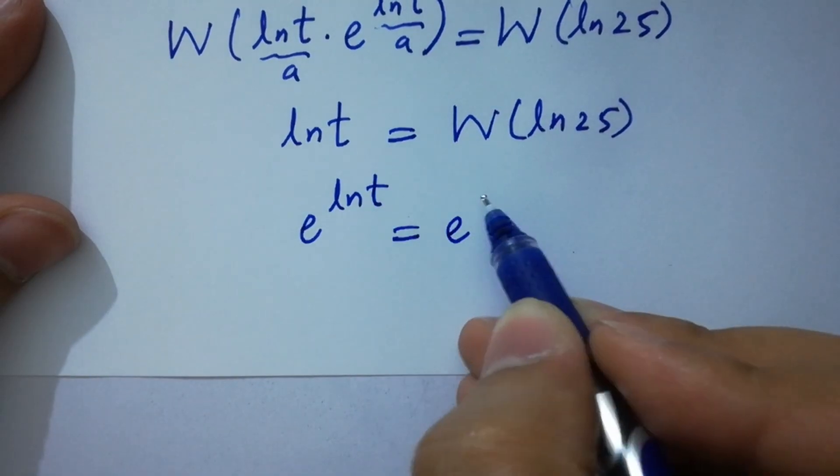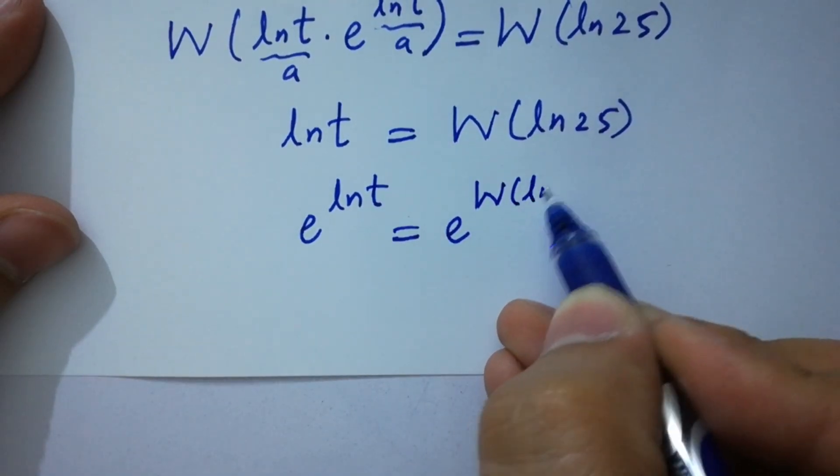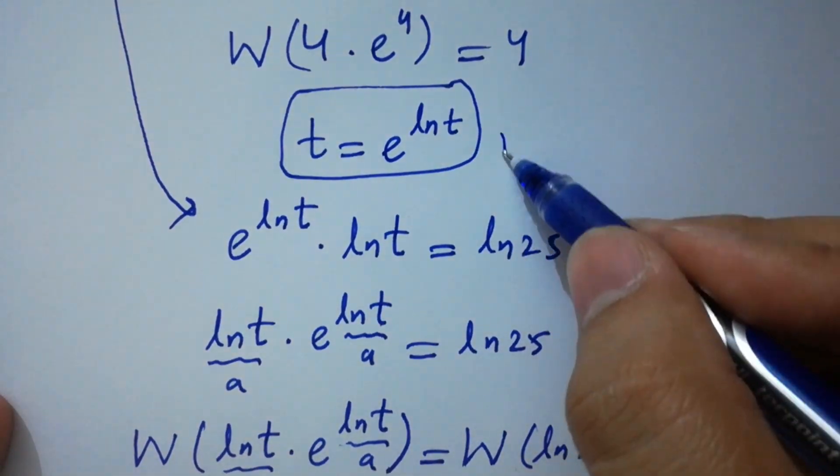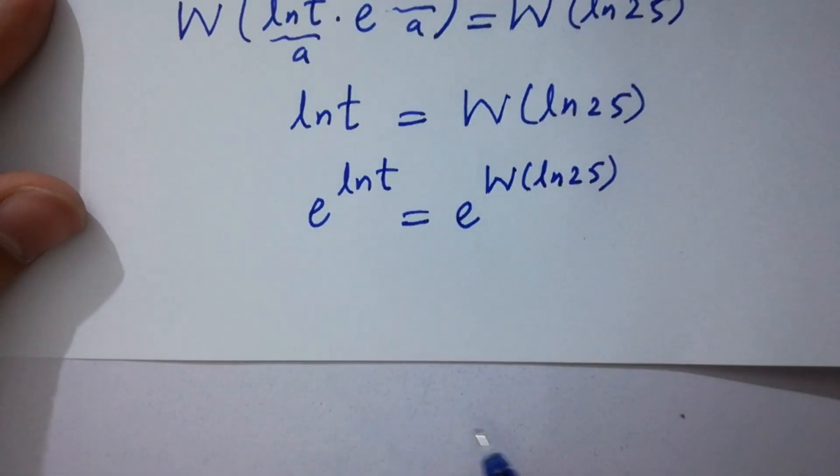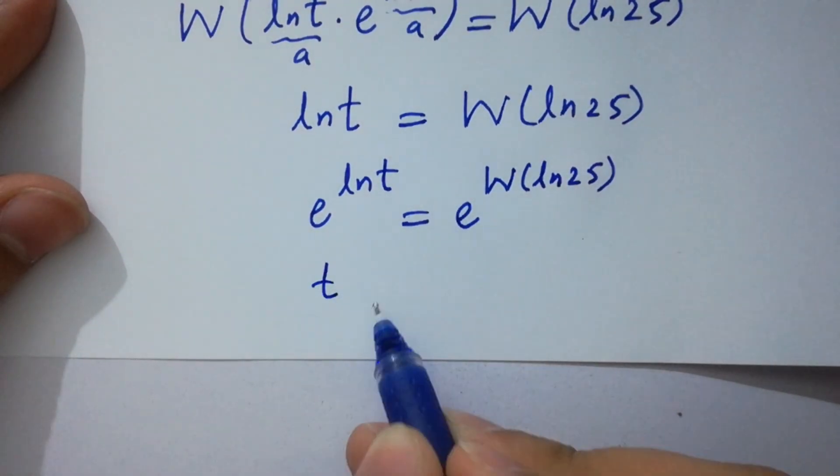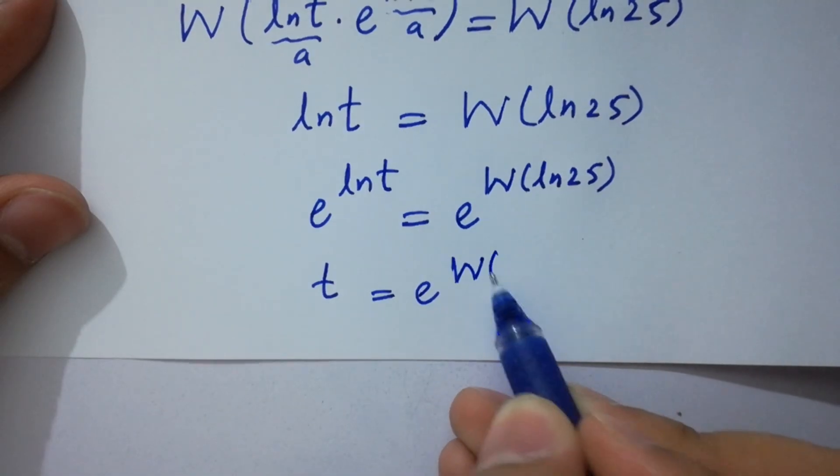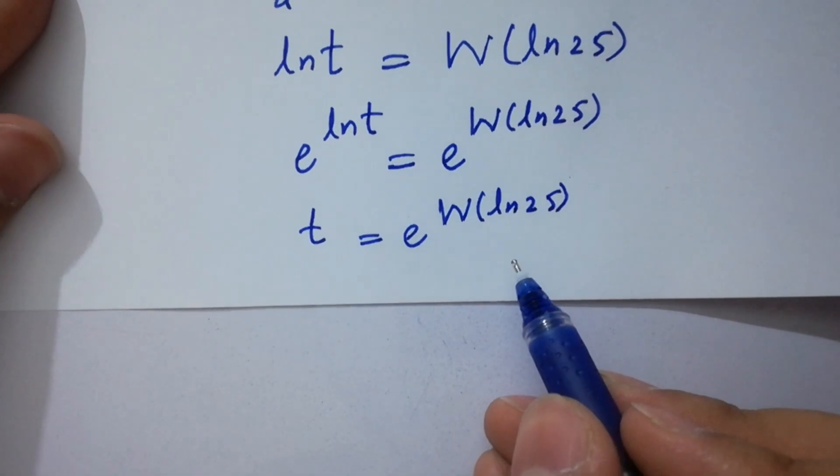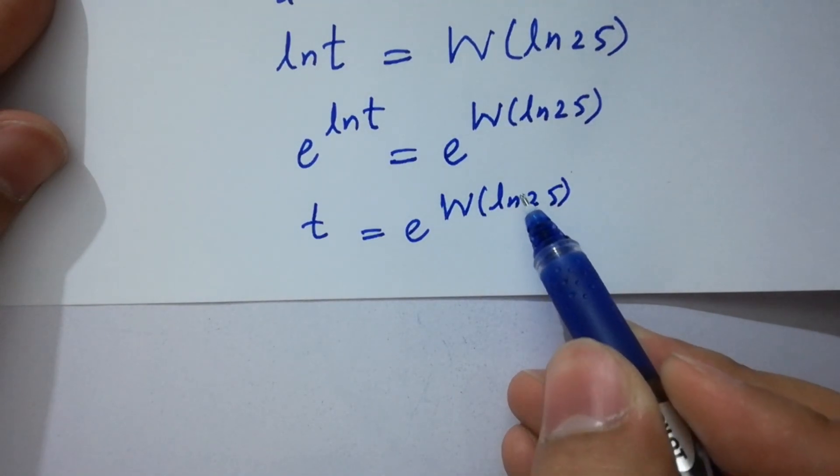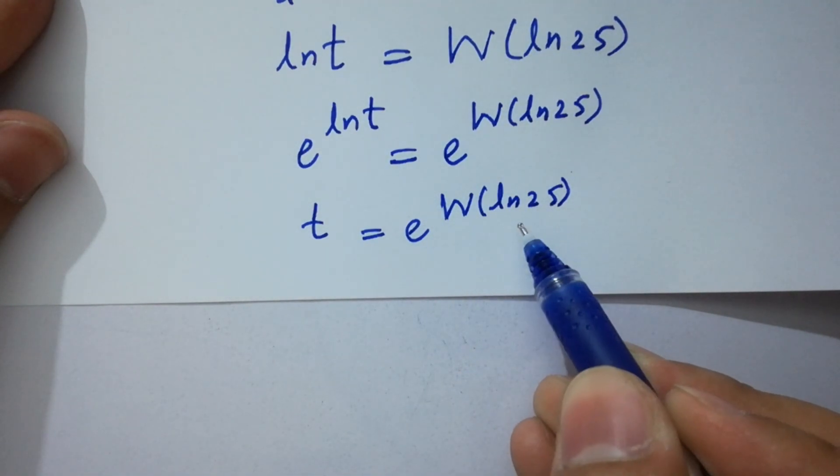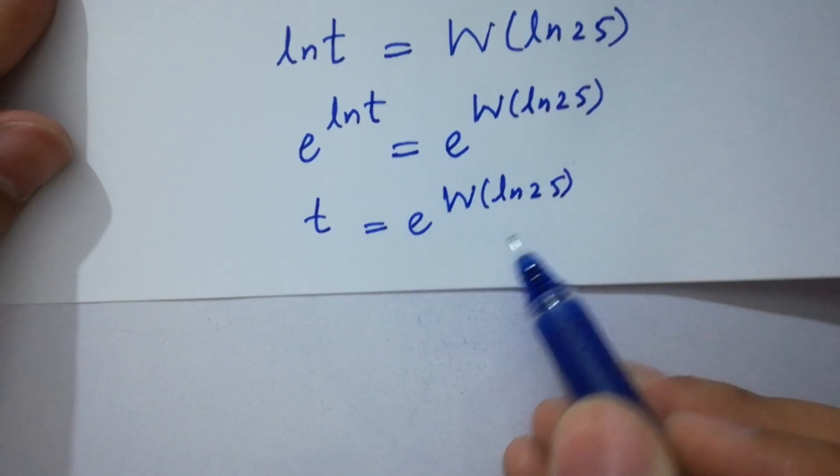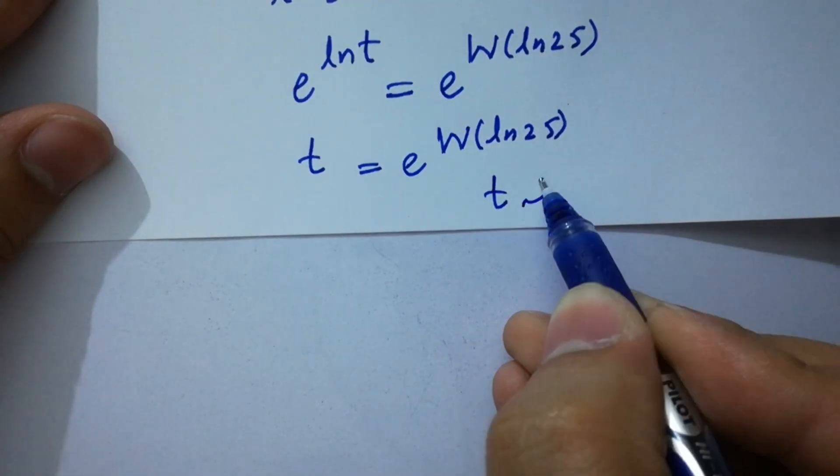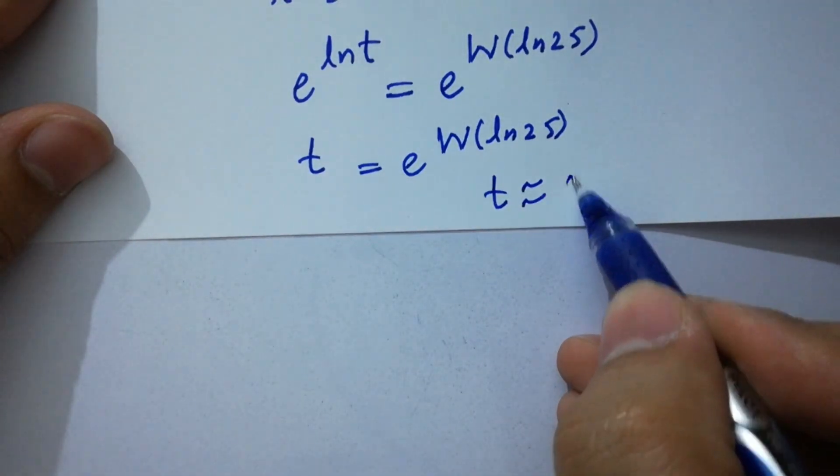Here, you can see ln t is equal to e to the power W of ln 25. So it will be t equal to e to the power W of ln 25. So we have the value of t which is approximately equal to 2.963.